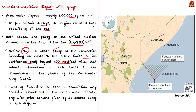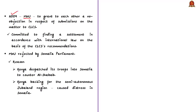The role of CLCS is to make recommendations to coastal states on matters related to the establishment of the outer limits of their continental shelf beyond 200 nautical miles. However, as per the rules of procedure of CLCS, the commission may consider submissions in areas under dispute only with the prior consent of all parties to such dispute. So the countries signed a Memorandum of Understanding in 2009, committing to find a settlement in accordance with international law on the basis of the CLCS recommendations. However, the MOU was rejected by the Somali Parliament.